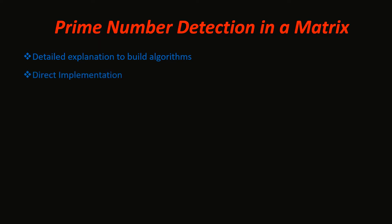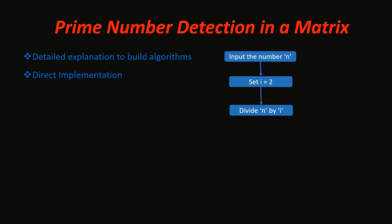But from this video I will directly show you the algorithm and then implement it. The algorithm for prime detection is simple: first we take the number and then we divide the number by all the numbers between 1 and the number itself. The idea is that the number n must not have any other factors other than 1 and n itself.